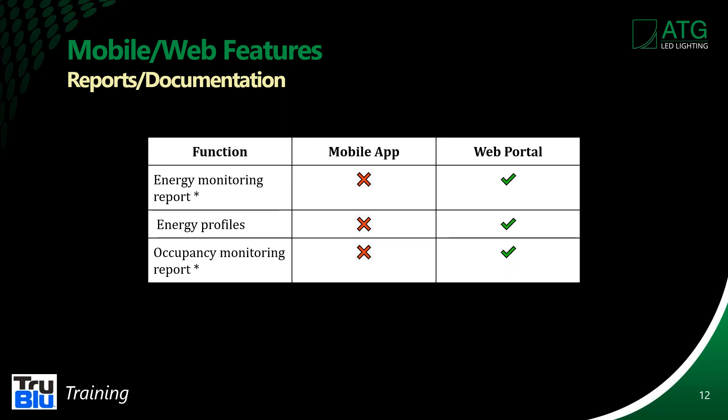Reports and documentation: let's say you have a campus or a school — there may be an energy manager. Those people always want to understand what's happening, so they can monitor the energy consumption or savings, energy profile, and occupancy monitoring. All of that needs to be done on the computer and requires a gateway.